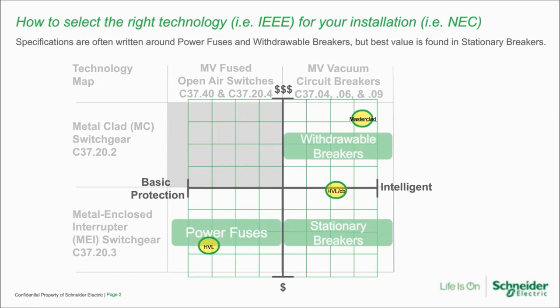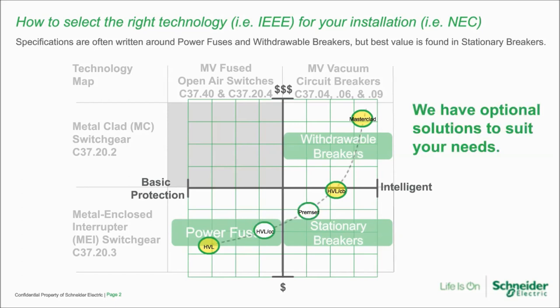We have other products too — other power fuse options that are a little more intelligent, and the new Prem Set, which is a stationary breaker in the same family as HVLCB. We have options to suit your needs. With that, I'm concluding my presentation and I'd like to take any other questions the audience may have.